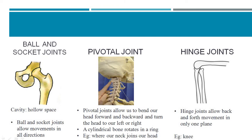Next is the hinge joint. The hinge joint is like the hinge of a door, which allows movement in only one plane or one direction. Your wrist, knee, and elbow are examples of hinge joints.